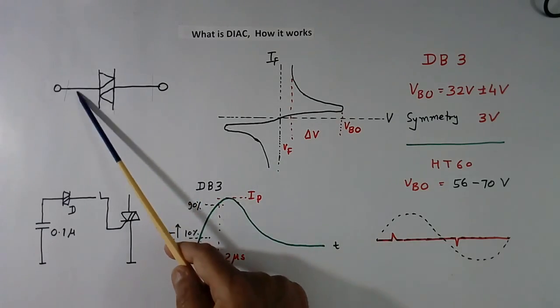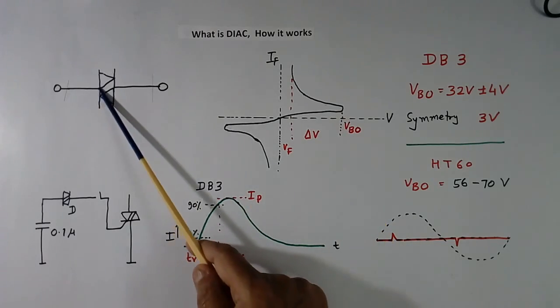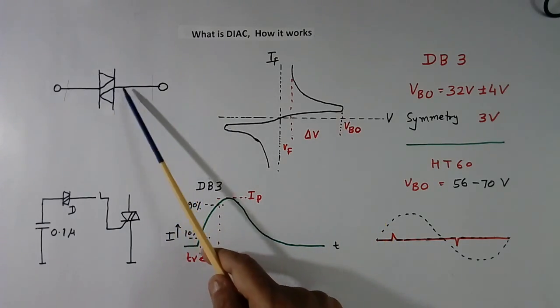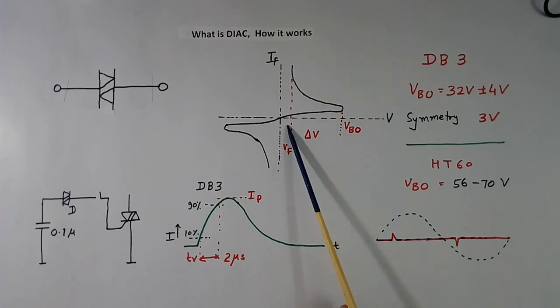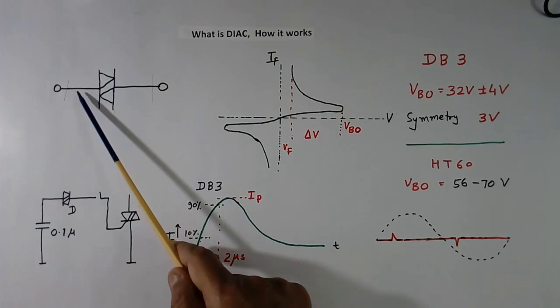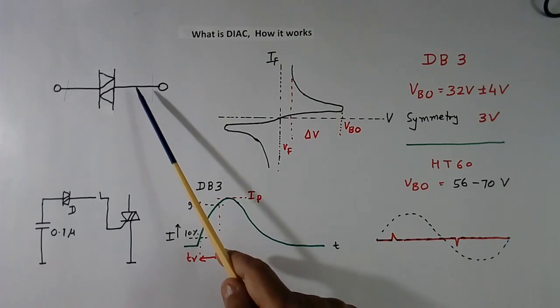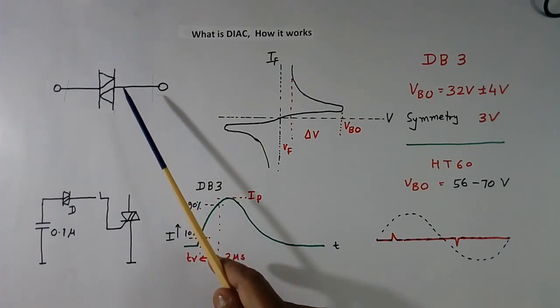When voltage across this exceeds VBO value, this starts conducting. And across this, a voltage drop will come, that is called delta V. And it will remain on as long as current flowing in this is more than holding current. When current becomes less than holding current, this becomes OFF.